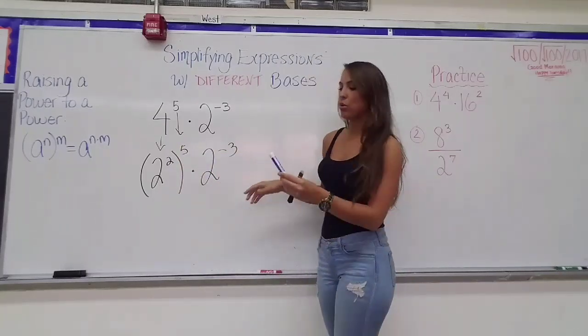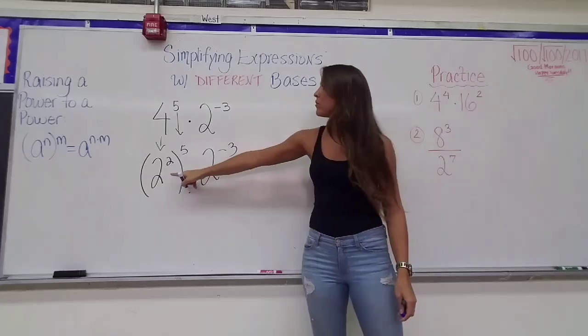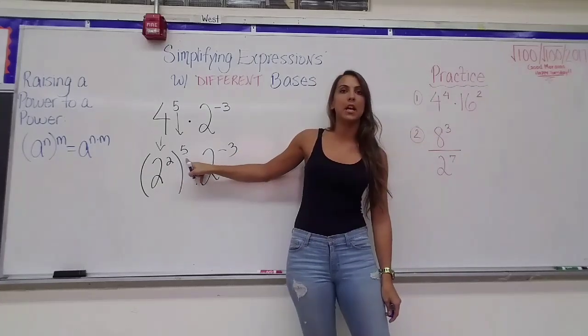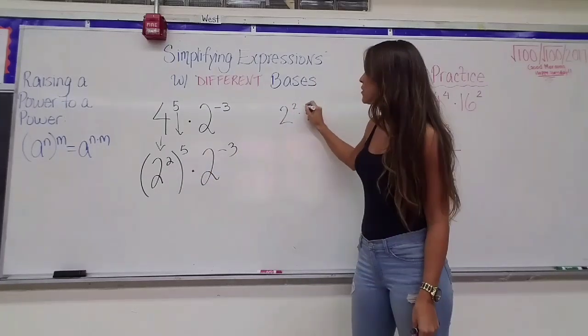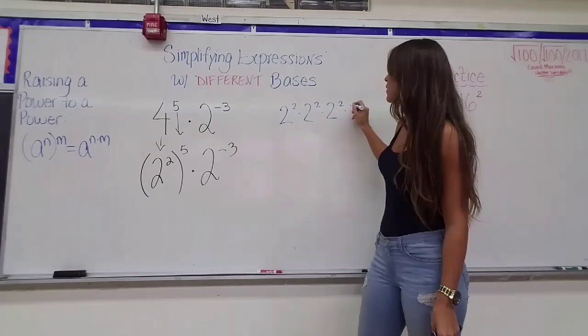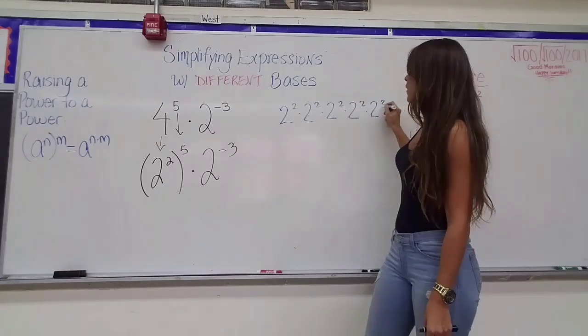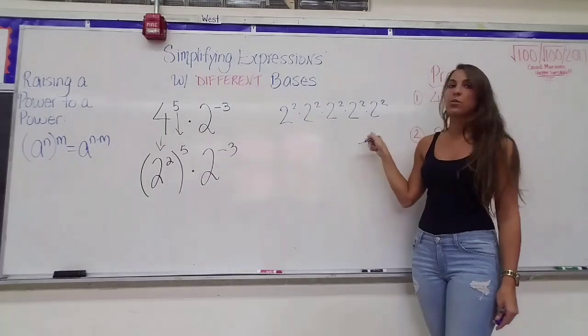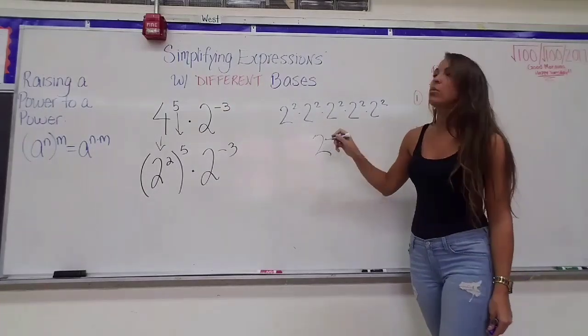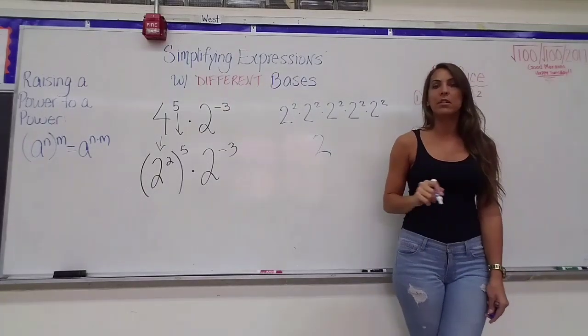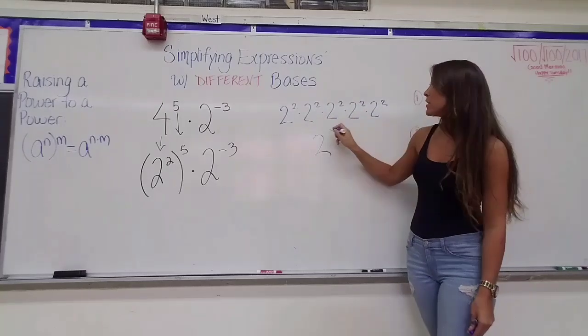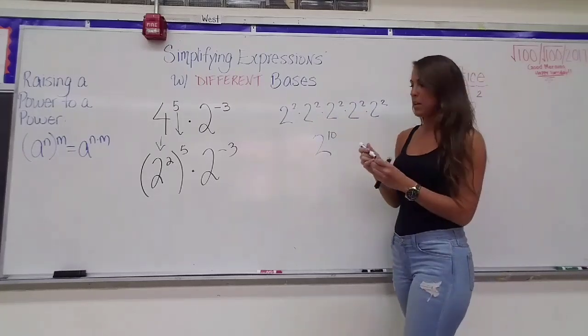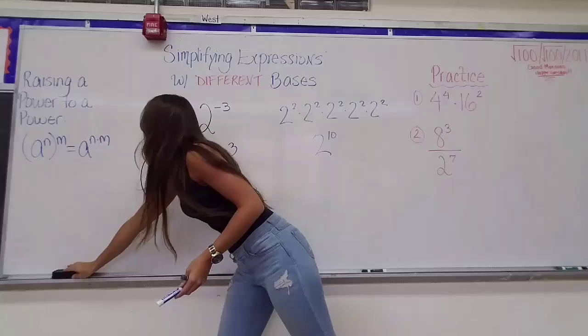And just to show you really quickly why that's true, if I take 2 to the 2nd and I write it out 5 times being multiplied by itself, it's 2 to the 2nd times 2 to the 2nd times 2 to the 2nd. And you see very quickly that if you apply MLE here, because now that you have the same base, my base is 2, and what does MLE say to do with the exponents? Add them all up. So if I add up 5 twos, I'll get 10. So just an explanation of why we multiply the exponents.